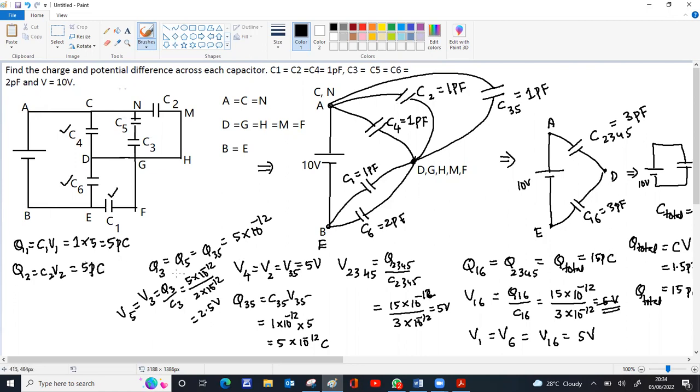So Q1, Q2. Now Q4 and Q6. For Q4, it is same again. 1 picofarad into 5. So Q4 is 1 into 5, 5 picocoulomb. Q6 is C6 into V6. V6 is 5. C6 is 2 picofarad. So Q6 is 10 picocoulomb.